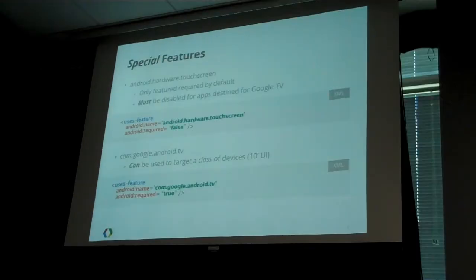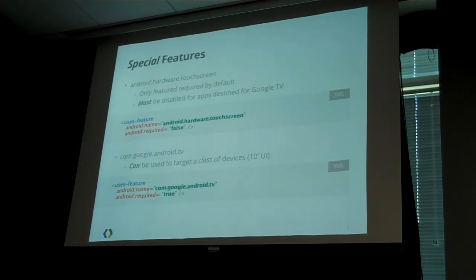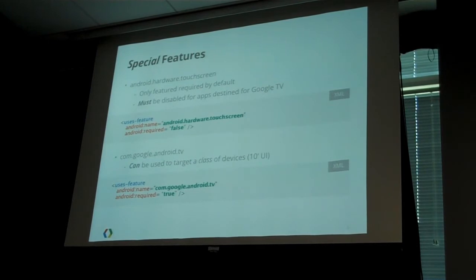There's a couple of special features. The touchscreen feature is the only feature that is on by default — you don't have to put it in the manifest for it to be required. So to get your app on Google TV, you have to make sure that you make that feature not required. You just say touchscreen false in your manifest. The other special feature — the Google Android TV feature — is if you actually want to target your app to Google TV devices, because Google TV devices are the only class of Android devices that have that feature.